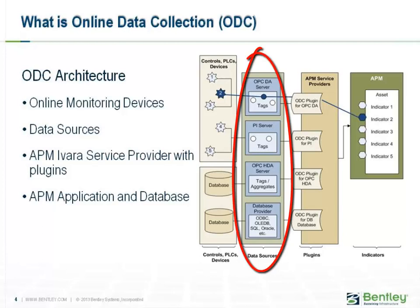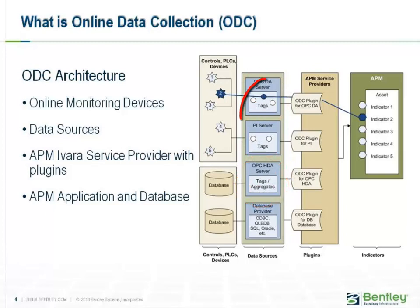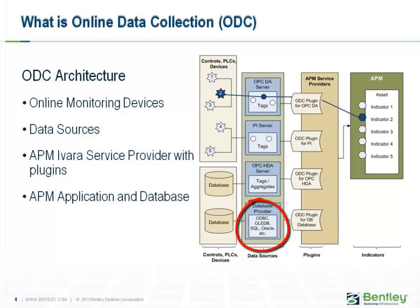The data source is a third-party application provided by the monitoring device manufacturer to expose field data to other applications like APM. It can be an OPC DA server that provides real-time data, an OPC HDA server that provides historical or aggregated data, a PI server which is a Process Historian that can provide both real-time or aggregated data, or any other database or historian provider that supports Open Database Connectivity (ODBC) or Object Linking and Embedding for Databases (OLEDB).